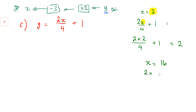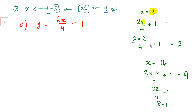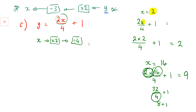Let's do x equals 16. It would be 2 times 16 — that's 32 — divided by 4 is 8, then add 1 is 9. So what we're doing is looking at what operations were done to 16: first multiply by 2, then divide by 4, then add 1, and we get the answer — in this case 9, though normally it would be whatever the y value is.